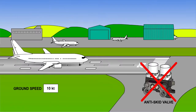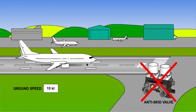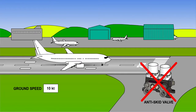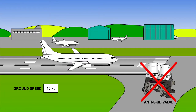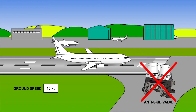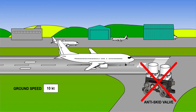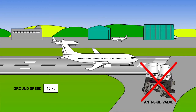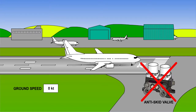To enable the pilot to have full control of the brakes for taxiing and manoeuvring, on some aircraft types, the anti-skid system is automatically deactivated when the aircraft has slowed down to below approximately 10 knots, when it is assumed that there is no further danger of skidding.